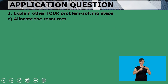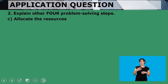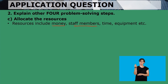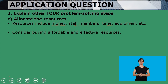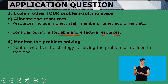The third step is to allocate the resources — you need to know who is going to do what. Allocate money, staff members, the right equipment so that the strategy can be executed well. Resources include money, staff members, time, and equipment. Consider buying affordable and effective resources so we don't face problems when strategies are not well executed.